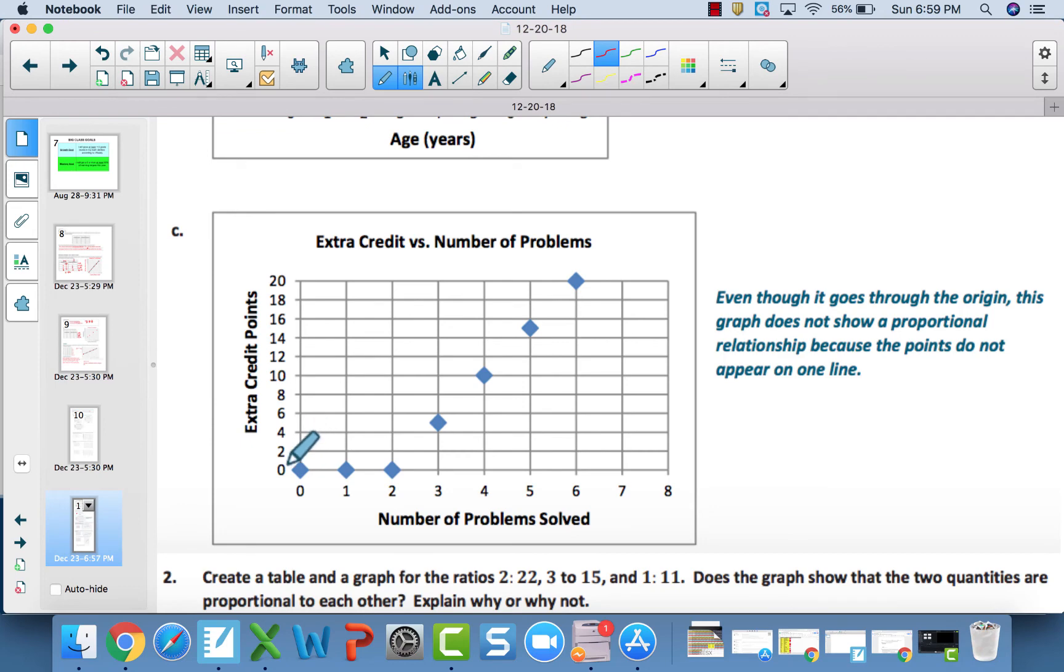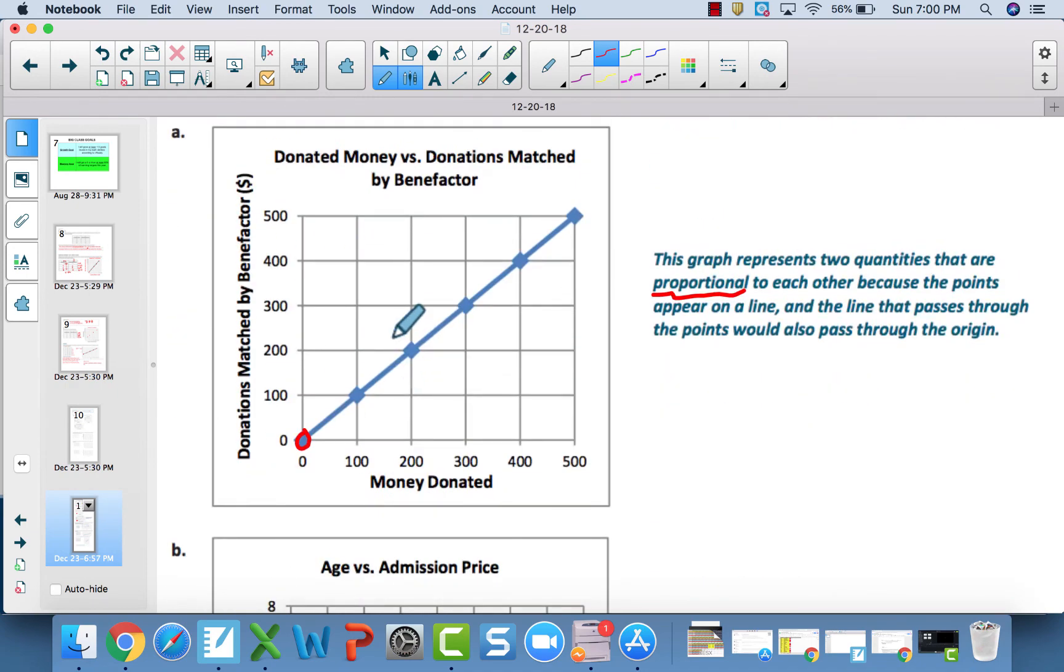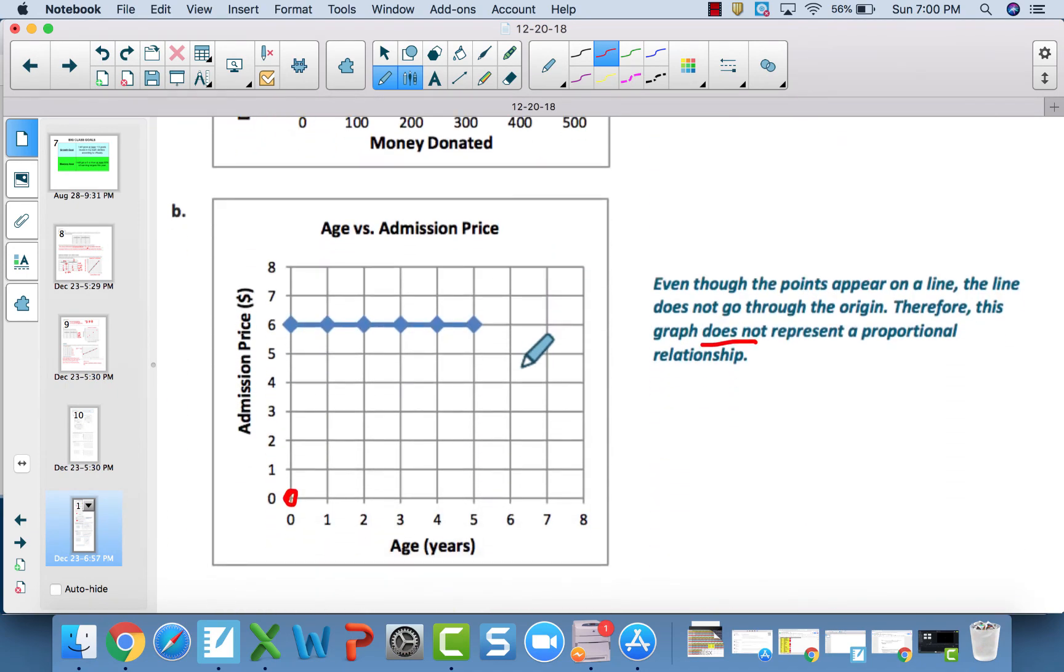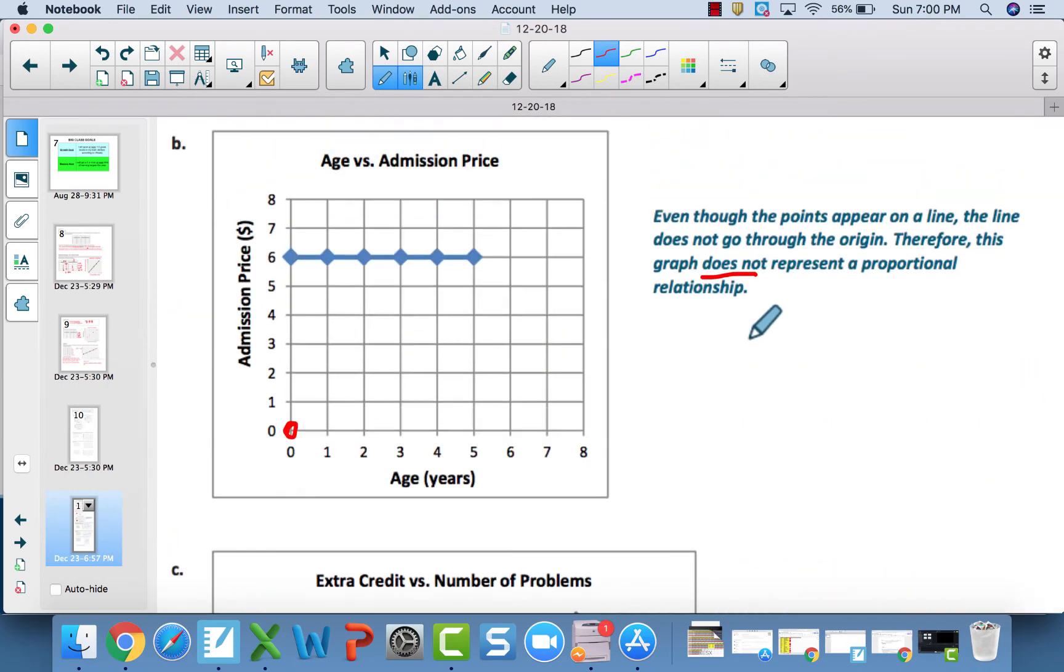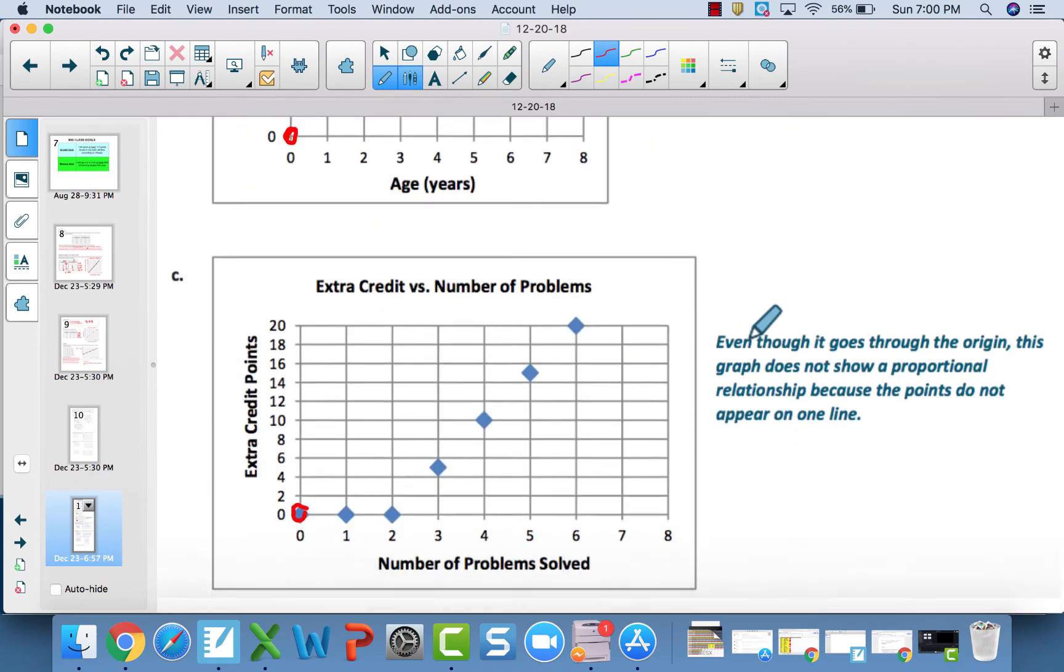C: although it goes through the origin—it starts at the zero point—this is not a straight line. This would be a nice curved line. That's not a line. That is not proportional. 1a is the only one that's proportional. B and C are both not, but they're not proportional for different reasons. Make sure the reasoning you have is correct.